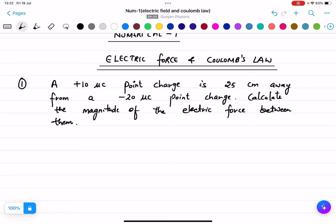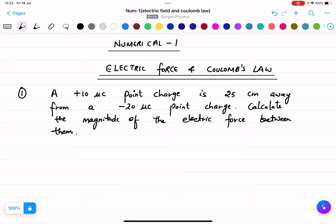Now we will do some numericals based on electric force and Coulomb's law. A +10 microcoulomb point charge is 25 centimeters away from a -20 microcoulomb point charge. Calculate the magnitude of the electric force between them.